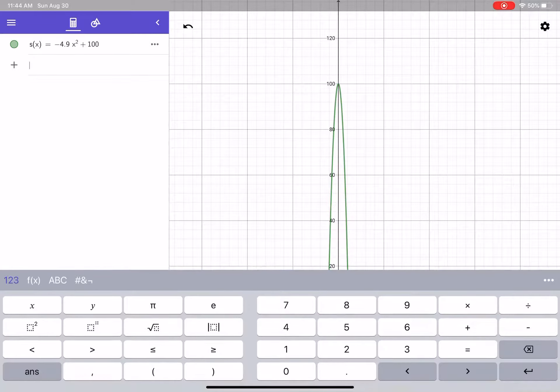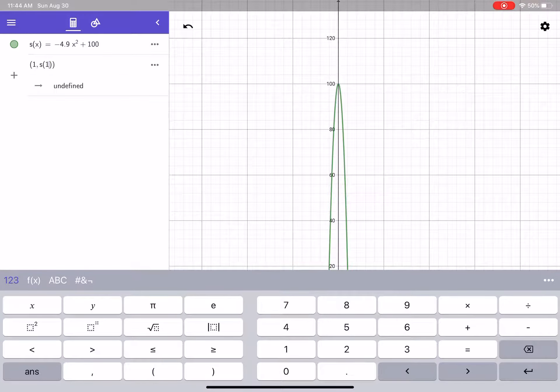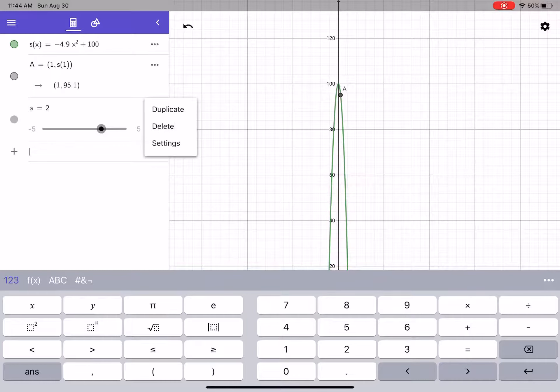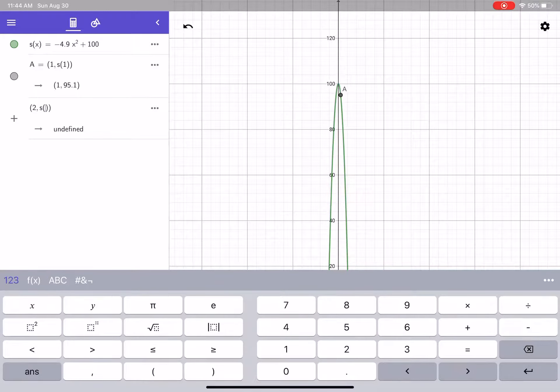So I'm going to plot a couple of points here. I'm going to plot the point, it was from 1 to 2. So (1, s(1)), and it will plot that point for me right there, that's very nice. And then I'm going to do the same thing with the second point, which is (2, s(2)). Hit enter on that one.